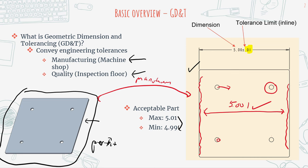You might ask yourself: why would we ever have a less tight tolerance? Why wouldn't we just make the tolerance as accurate as possible for the machining tools being utilized? This is a great question and it relates directly to money and time. The more accurate the tolerance needs to be for a feature, the more accurate tooling is required, and oftentimes the longer the machining process actually takes. So you can have an extremely accurate part if you're willing to pay a lot of money and wait a longer period of time — both of which are extremely disadvantageous for engineers.